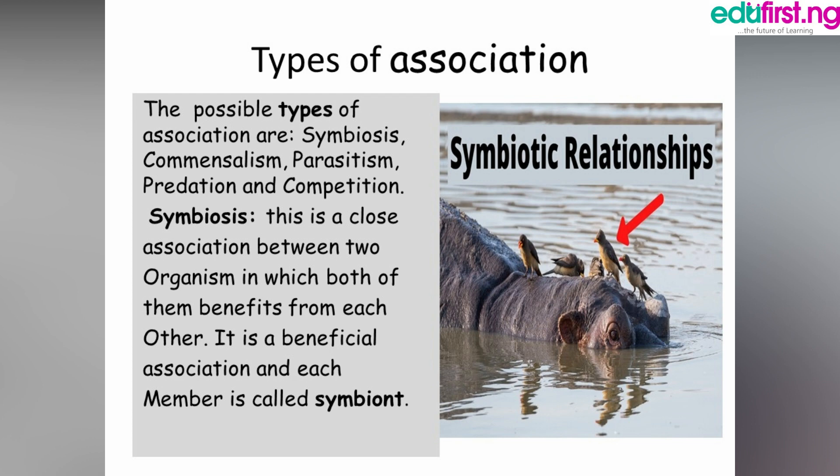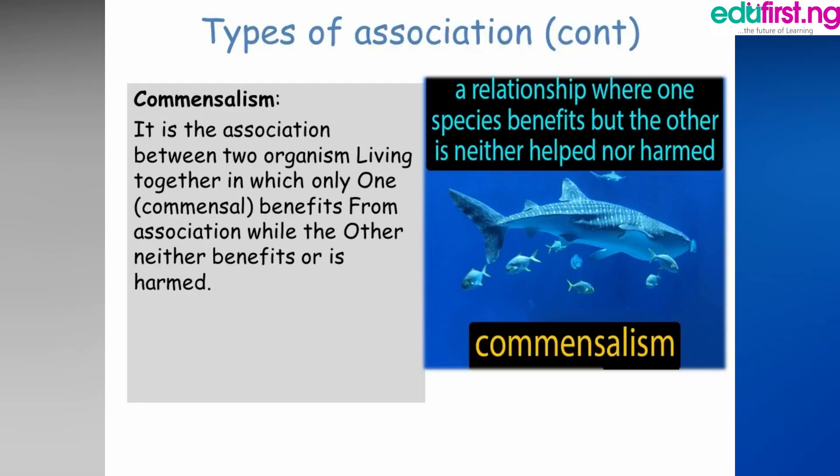We have the commensalism relationship. This is an association between two organisms where one species benefits but the other is neither helped nor harmed. Simply put, association A benefits while the other is unaffected.